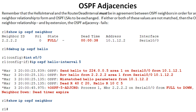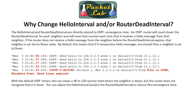Always be careful with debugs on production routers — know what you're doing. This command also has real-world application: if you're trying to form a neighbor relationship with a router owned by a different company and they claim it's not their problem, running this debug can reveal if they've misconfigured their timers. Now, after learning about these timers, you might think about setting hello packets to every one second and the dead timer to two seconds to speed up OSPF convergence.